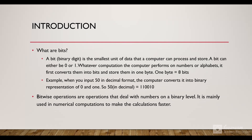So let's take an example. When we input 50, for us it is a decimal format which we input it in. The computer converts it into binary representation of 0 and 1. So 50 decimal will be equal to 110010 in binary.